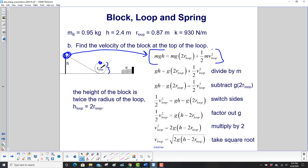And what's the height here? It's twice the radius. So that's two times the radius of the loop, and we see we have that up there, plus one half mv squared loop. Once again, we divide through by m, so mass does not matter in this problem.